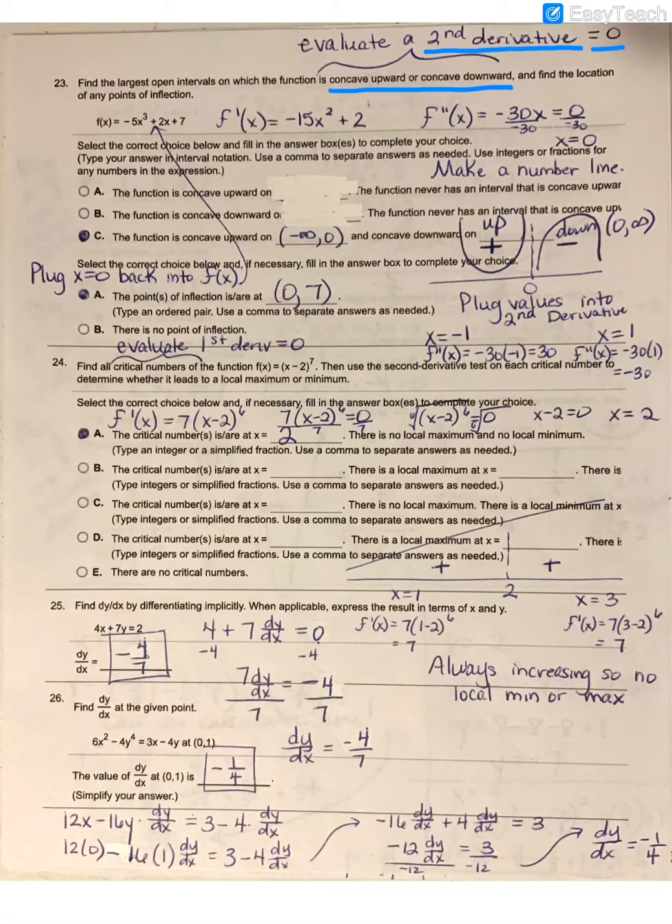Here is my original function. My first derivative would be negative 15x squared plus 2, and then when I take my second derivative, I get negative 30x.